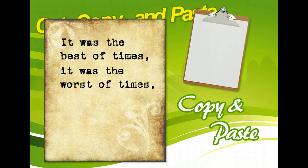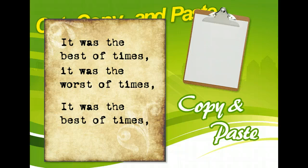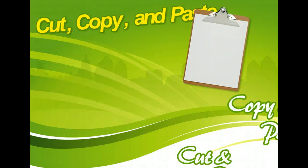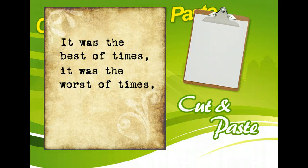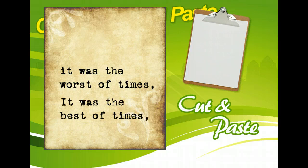When you copy text, an exact duplicate of the selected text is placed on the clipboard, while the original text stays in its place. When you cut text, the selected text is removed from your document and placed on the clipboard. Once the text is placed on the clipboard, either by copying it or cutting it, you can then paste the text in a different location or in a different document.